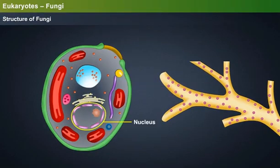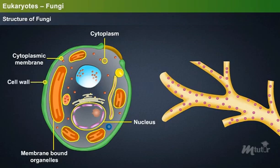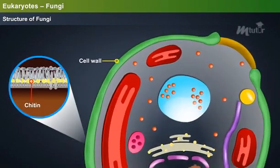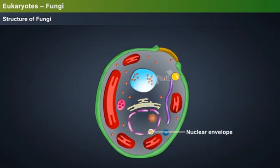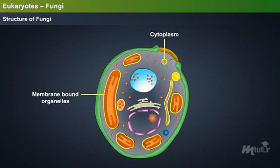Structure of fungi: Each cell of fungus comprises a nucleus, membrane-bound organelles in the cytoplasm, enclosed by a cytoplasmic membrane and cell wall. The cell wall of the fungus is made up of chitin. The nucleus of the fungus contains a nuclear envelope and nucleolus.